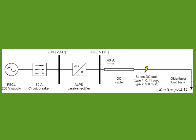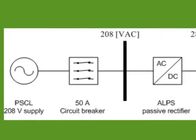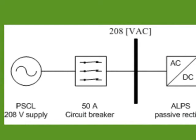In this experiment, we'll be energizing a small DC microgrid powered from a three-phase utility-side 208 volts supply.